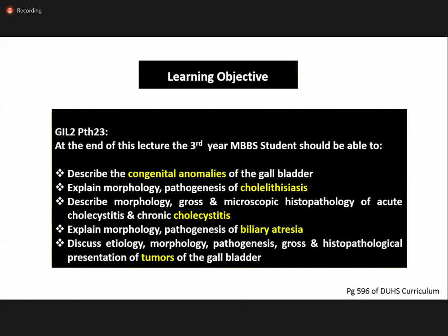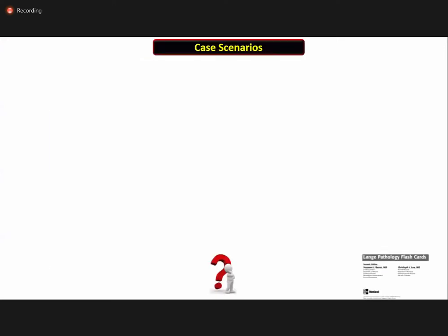These are the learning objectives for today's lecture. At the end of this lecture, the third year MBBS students should be able to describe the congenital anomalies of the gallbladder, explain the morphology and pathogenesis of cholelithiasis, describe the morphology — gross and microscopic description — of acute cholecystitis and chronic cholecystitis, explain morphology and pathogenesis of biliary atresia, and discuss etiology, morphology, pathogenesis, gross and histopathology.